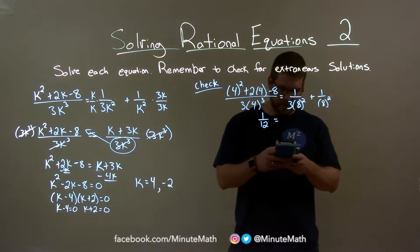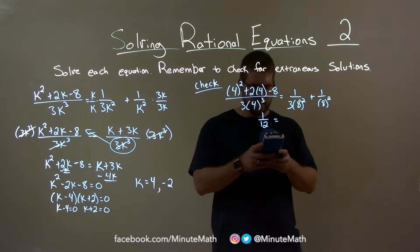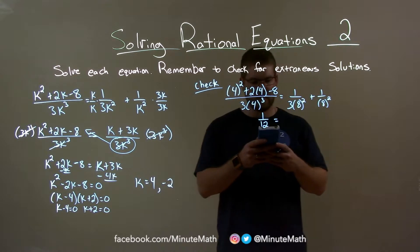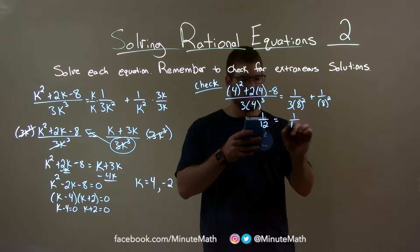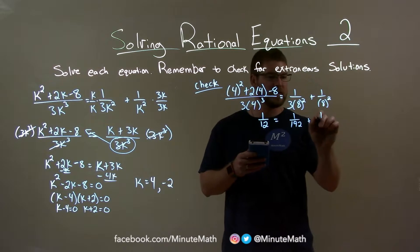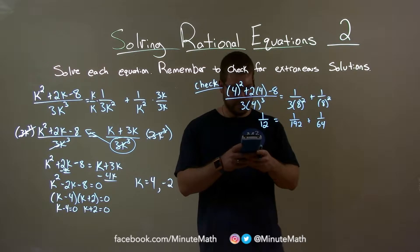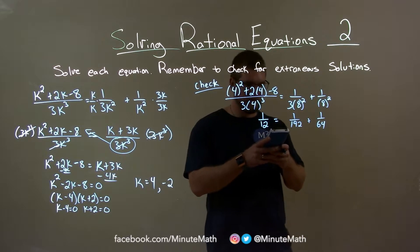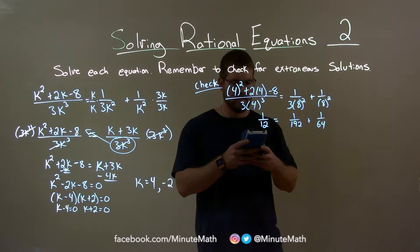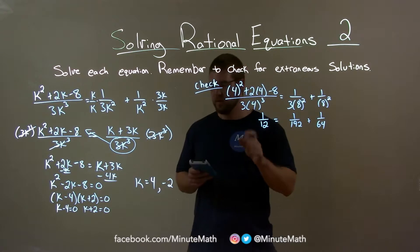Next one: 1 divided by 3 times 8 square, and that as a fraction is 1 over 192. Plus here, 1 over 64, right? 8 squared, 64. We added that together to 1 over 192, and I have 1 over 96. So left and right hand side aren't equal.